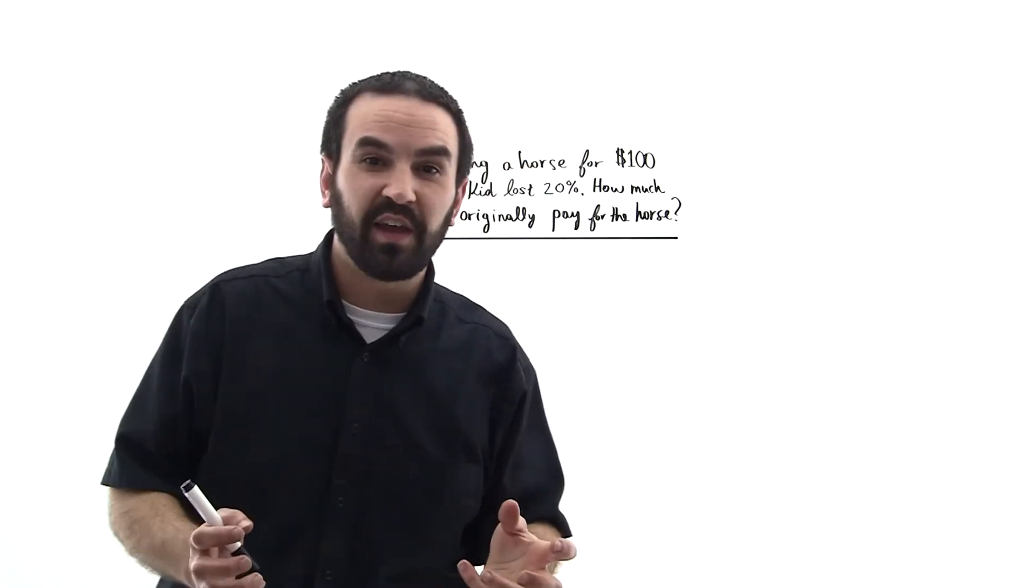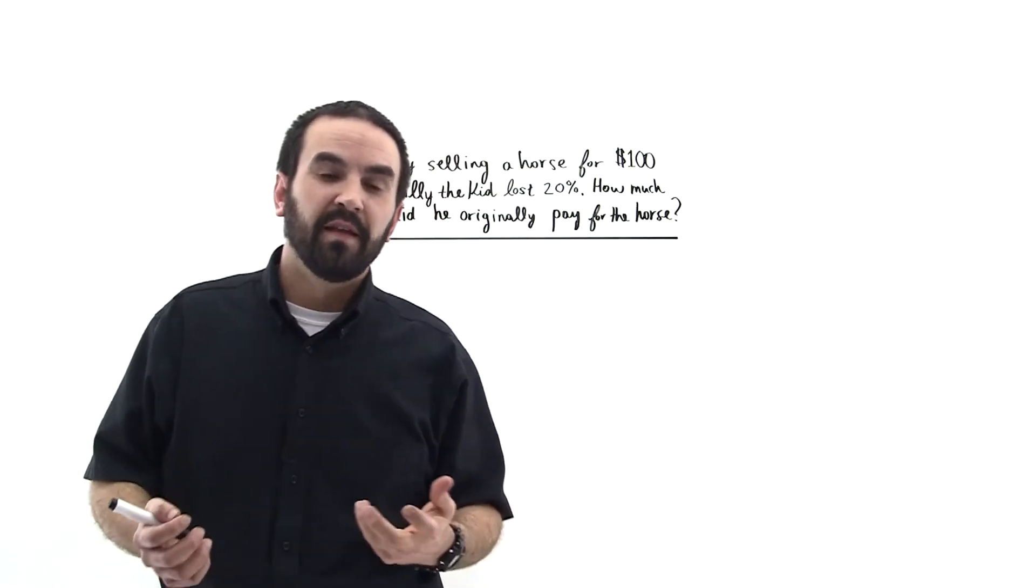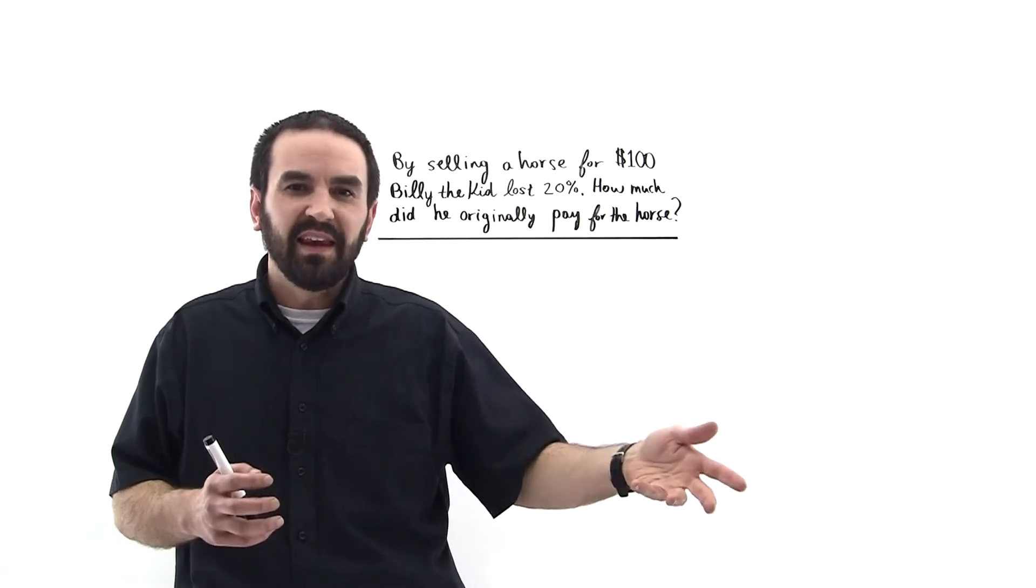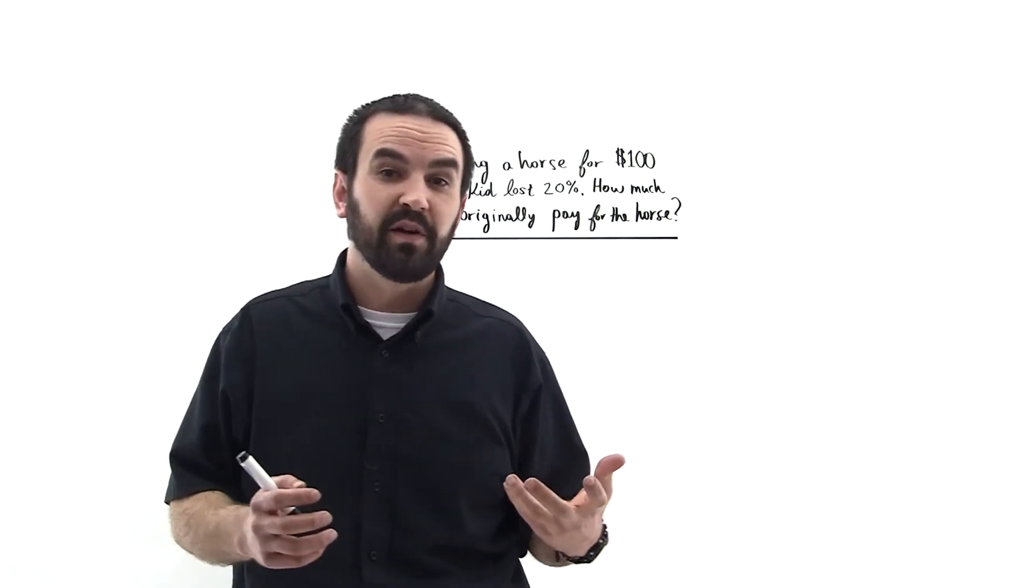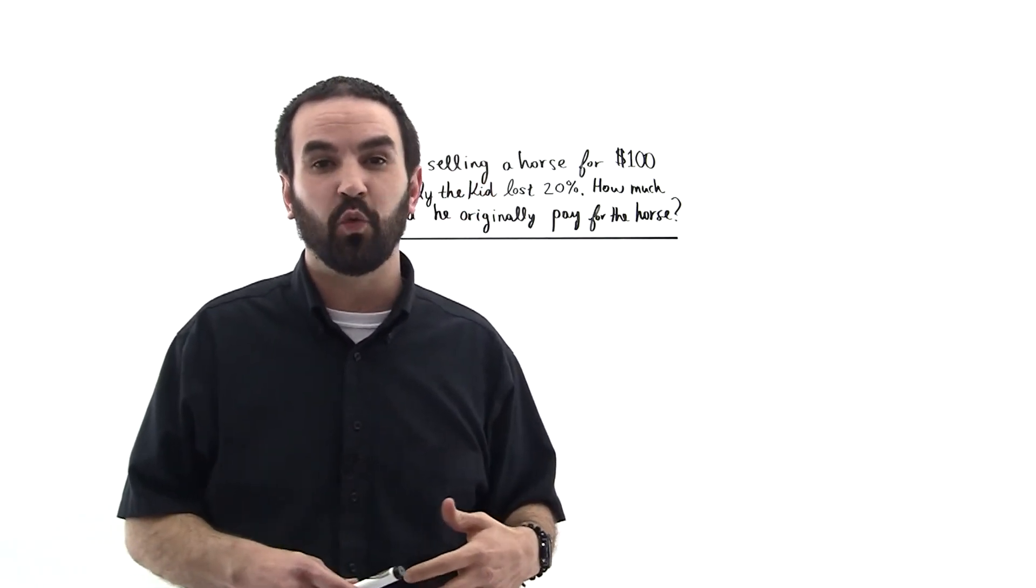We're either going to multiply the two together or we're going to divide one by the other. Well, think about it. If you multiply 0.8 times 100, you get 80. You get some smaller number. So the only way that you're going to get a bigger number is if you divide 100 divided by 0.8 and that gives you 125.